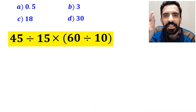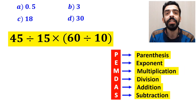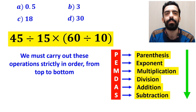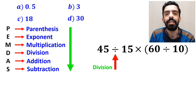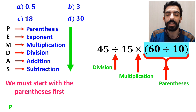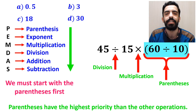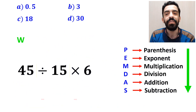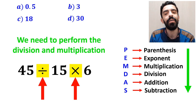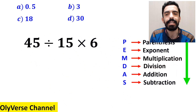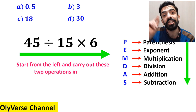Now let me explain step by step how to solve this expression correctly. To solve this question, we need to follow the PEMDAS rule step by step, carrying out operations strictly in order from top to bottom. As you can see on the screen, this expression has a division sign, then a multiplication sign, and finally parentheses. According to PEMDAS, we must start with the parentheses first, since they have the highest priority. So we rewrite the expression as 45 divided by 15 multiplied by 6. Now it's very important to keep in mind that multiplication and division are on the same level of precedence, and the best approach is to start from the left and carry out these two operations in order.